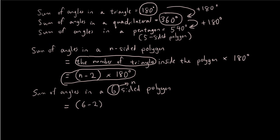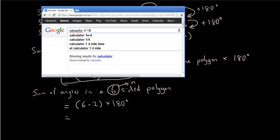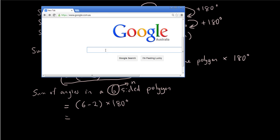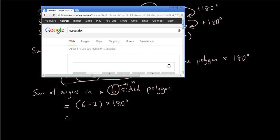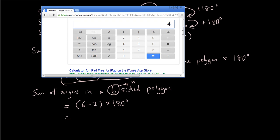So sum of angles in a six-sided polygon is 6 minus 2, which is 4 triangles, times by 180 degrees, which is 720 degrees.